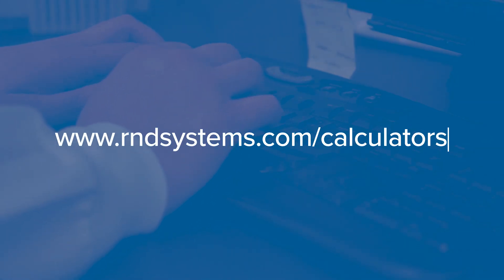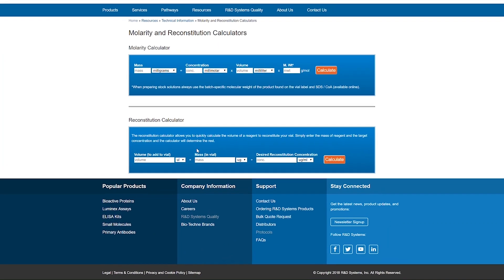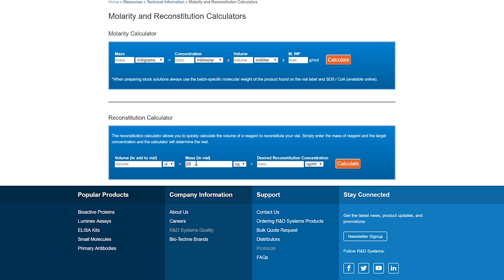R&D Systems offers a helpful reconstitution calculator at www.rndsystems.com/calculators. This tool helps you easily calculate the correct volume of buffer every time. The calculator can also be found on each product specific page.